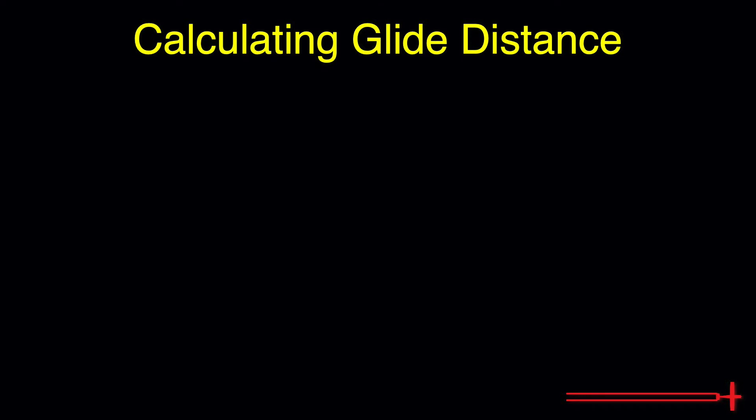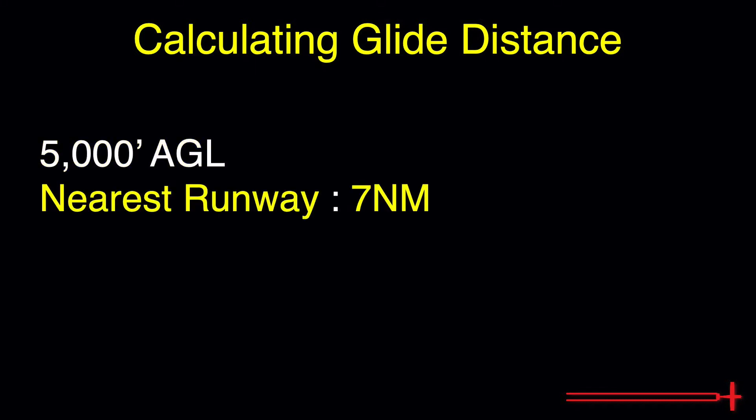You're out in the practice area performing clearing turns and the engine suddenly sputters. Oil pressure is in the red and shortly after you find yourself with a dead engine that won't restart. You're at 5,000 feet AGL and the nearest airport runway is 7 miles away. Can we make it there or should we start looking for the least bumpy field down below? We'll answer that question today.